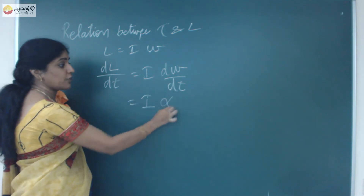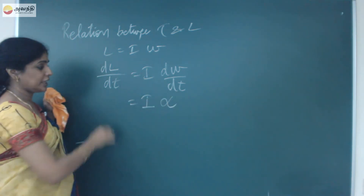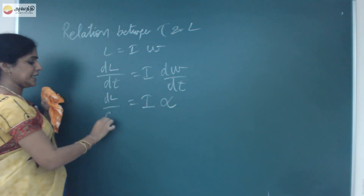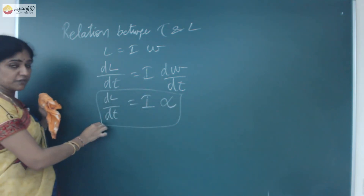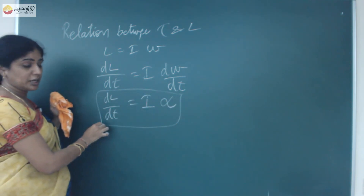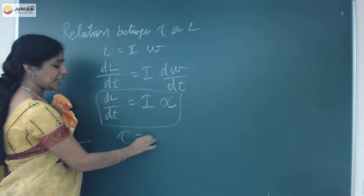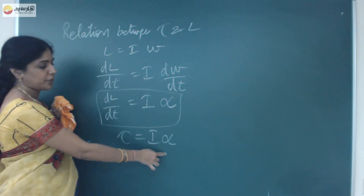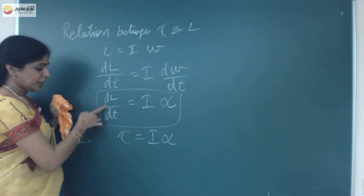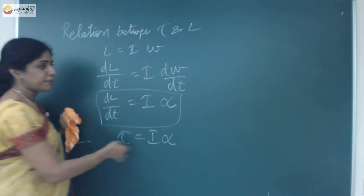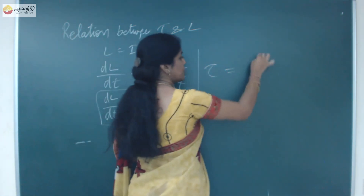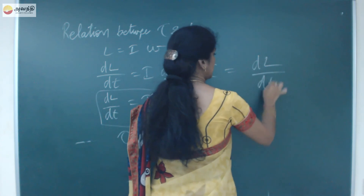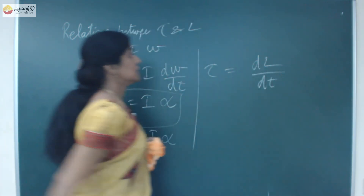Rate of change of angular velocity is angular acceleration, so DL by DT is equal to I alpha. Just now we have seen what is the relation between torque and angular acceleration. Comparing both sides, I can write this as Tau is equal to DL by DT.